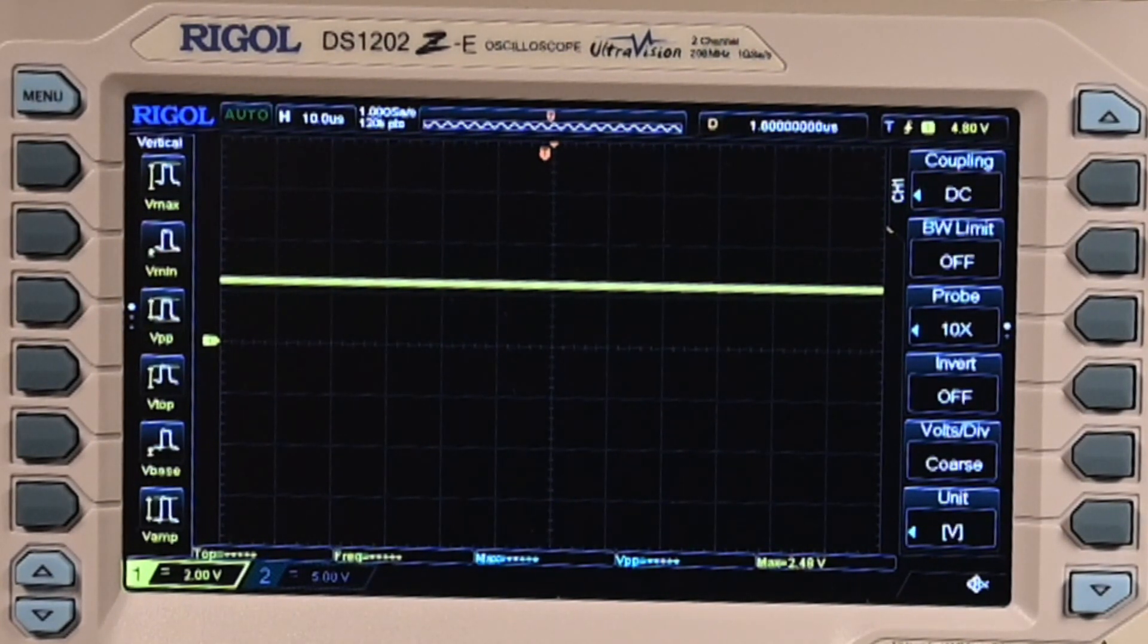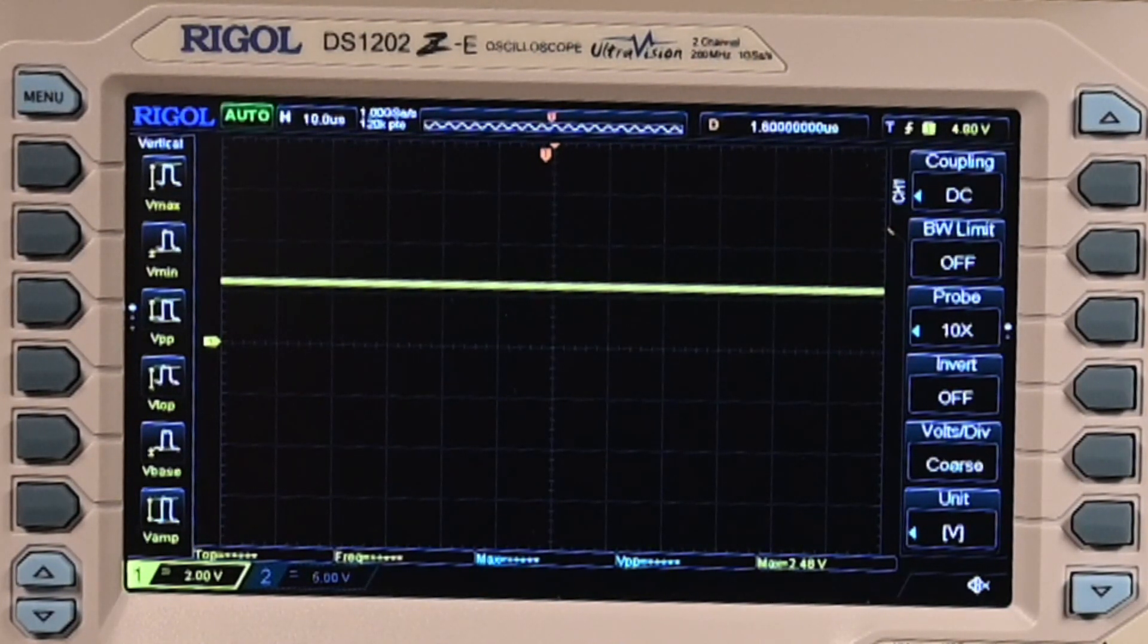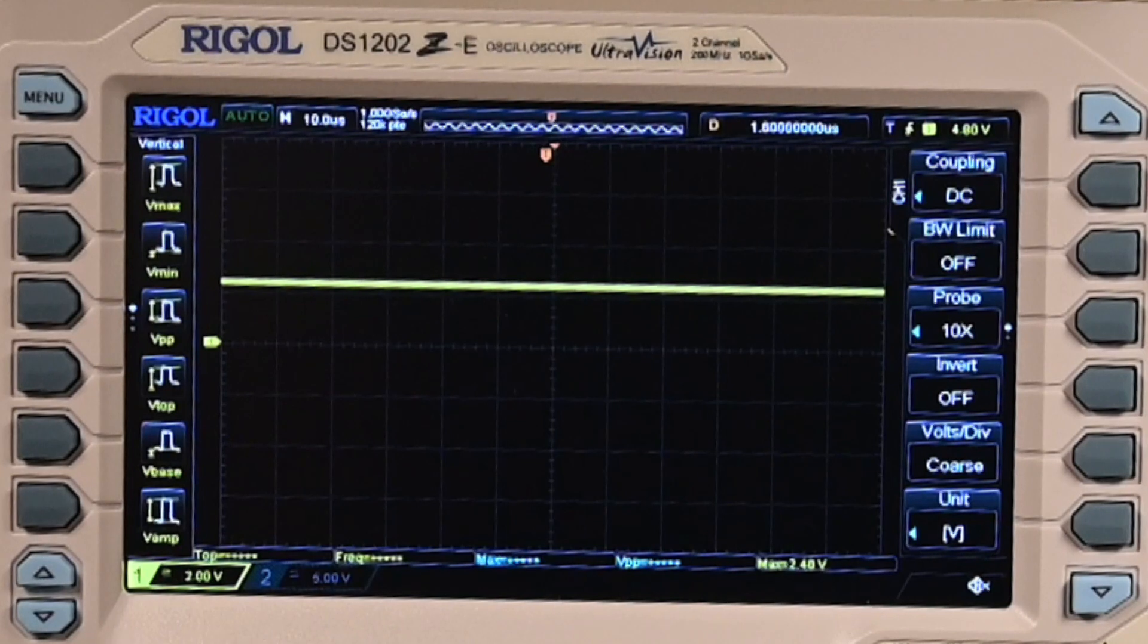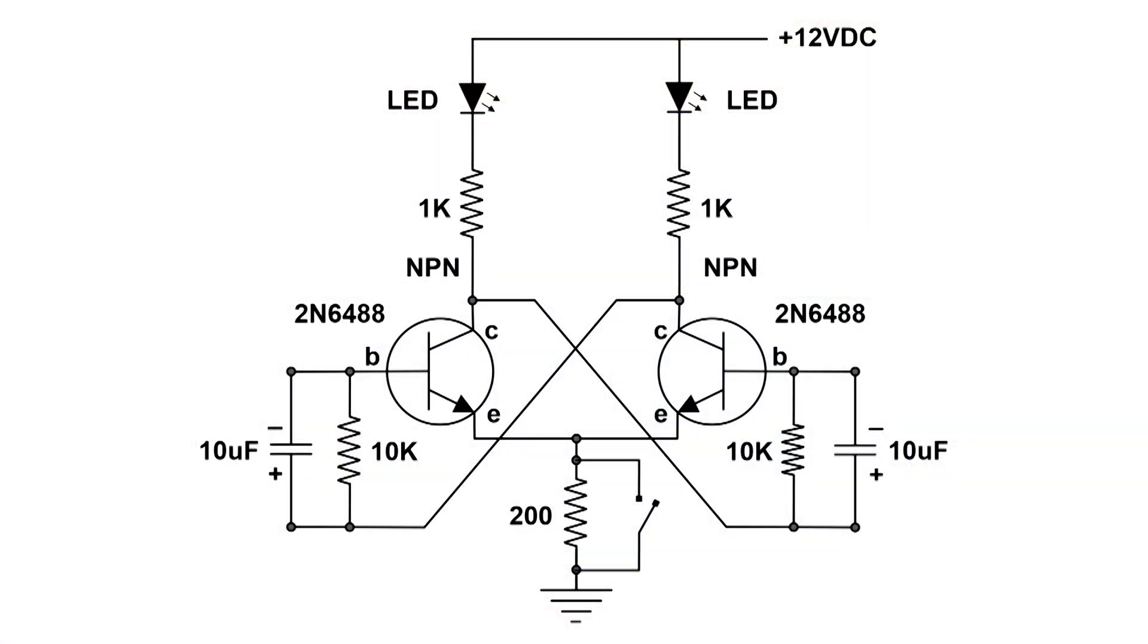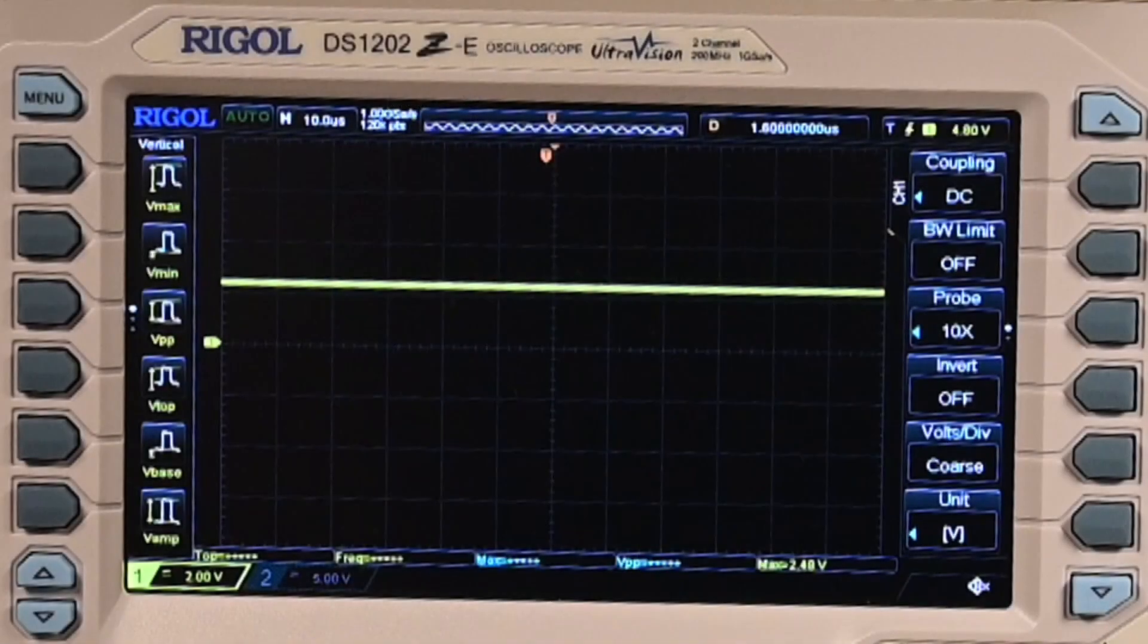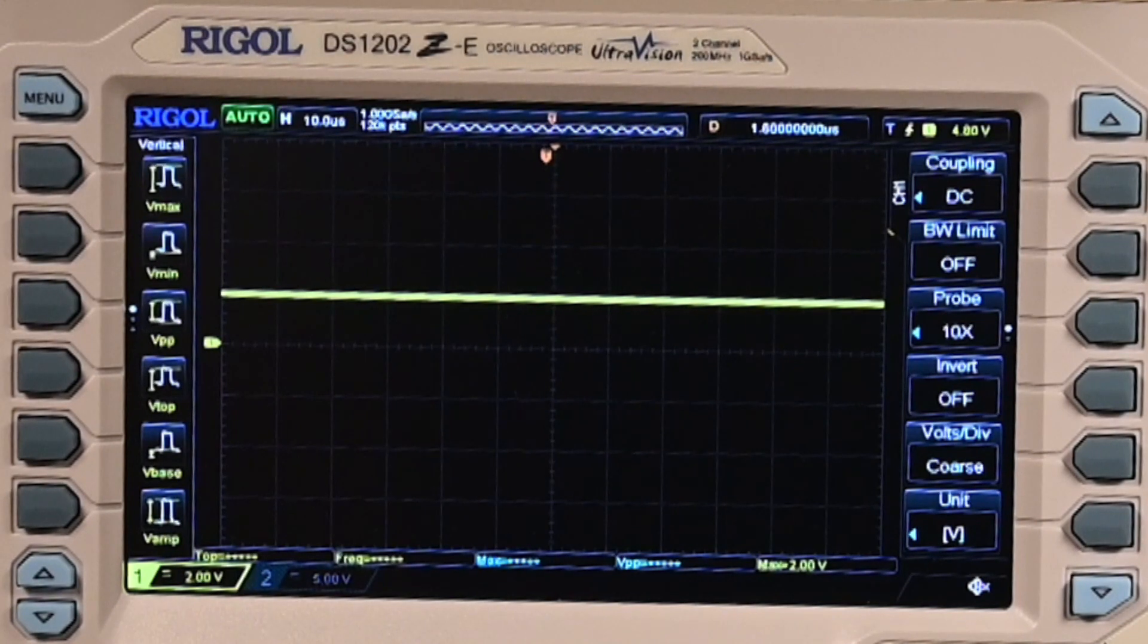I've got the scope hooked up to the NPN flip-flop on the base of the left transistor. I'm going to trigger it by shorting out the resistor. When I let go, we get a negative pulse.